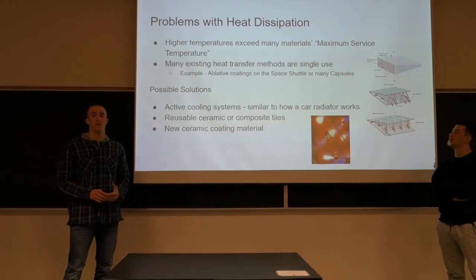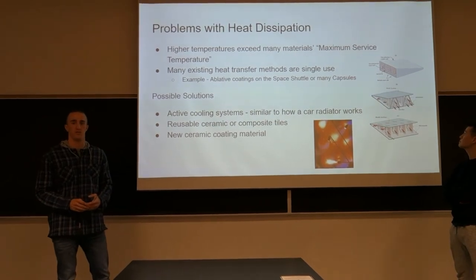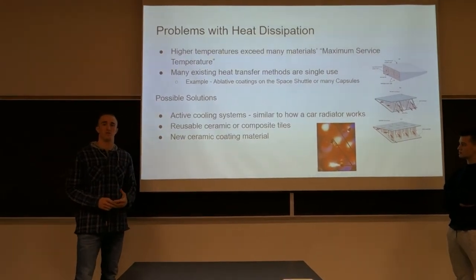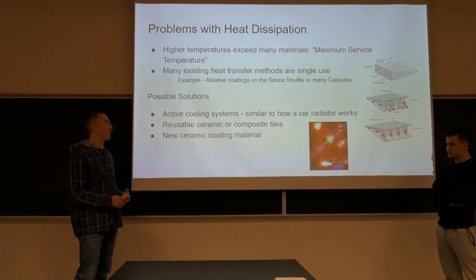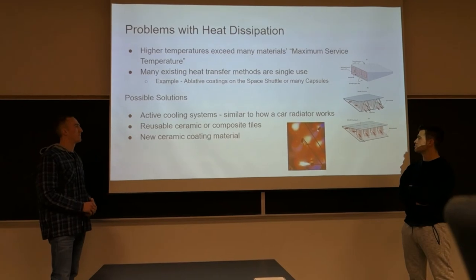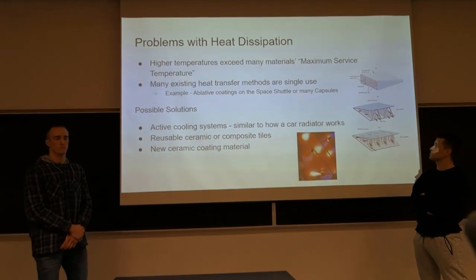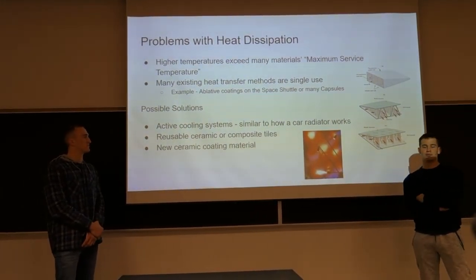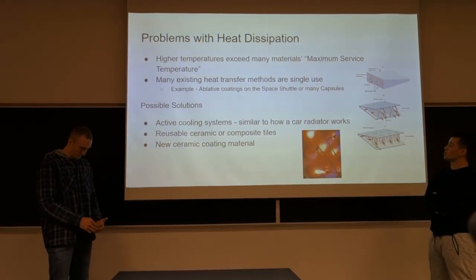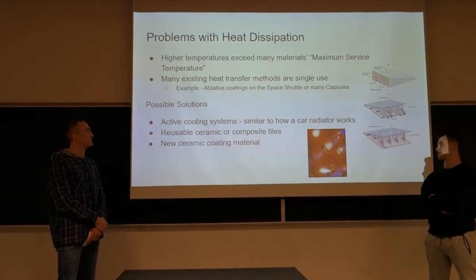Hypersonic travel is achieved at Mach 5 or higher. At these extreme speeds, the temperature due to friction from the atmosphere can reach up to 3,000 degrees on the aircraft. At these extreme temperatures, ablation and oxidation begin to occur, which essentially strips the aircraft down — obviously not good because the aircraft is falling apart. The structural problem with this increase in temperature is that higher temperatures can exceed many common materials' maximum service temperature, meaning properties of the material change and it can weaken the structure. Many existing heat transfer methods are only single-use, such as the ablative coatings found on the space shuttle or different capsules.